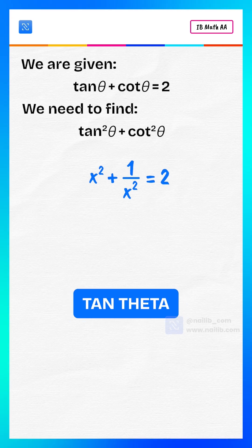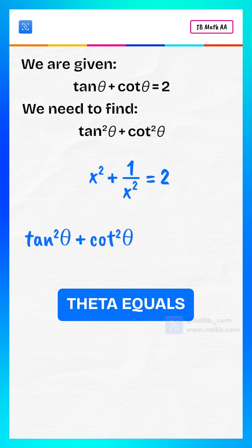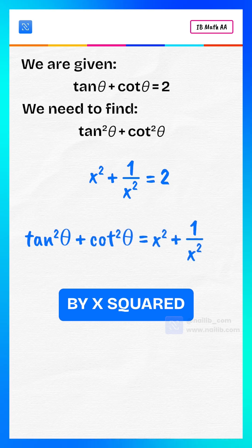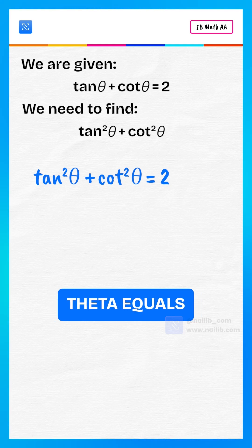Remember, x equals tan theta. So tan squared theta plus cot squared theta equals x squared plus 1 by x squared. Therefore, tan squared theta plus cot squared theta equals 2.